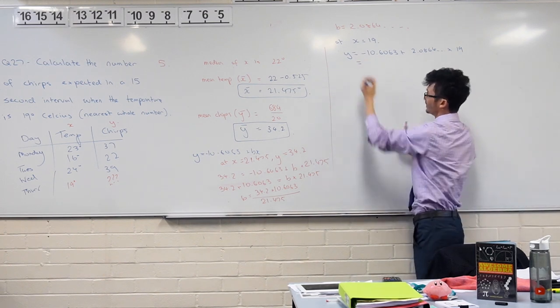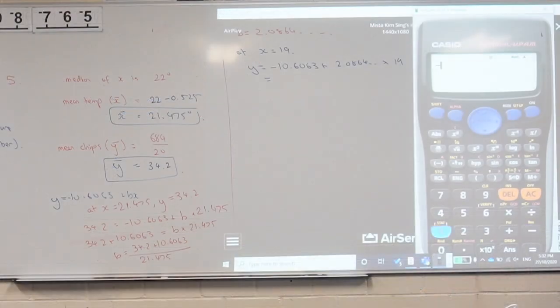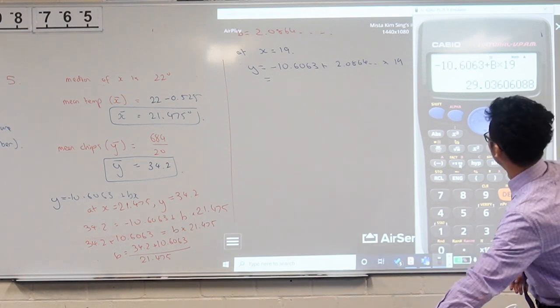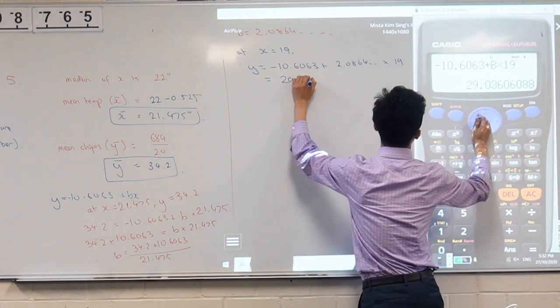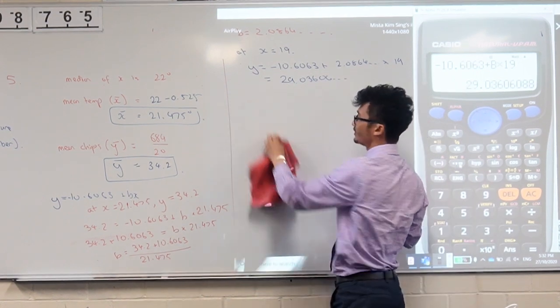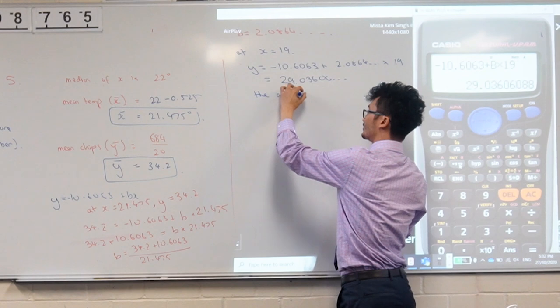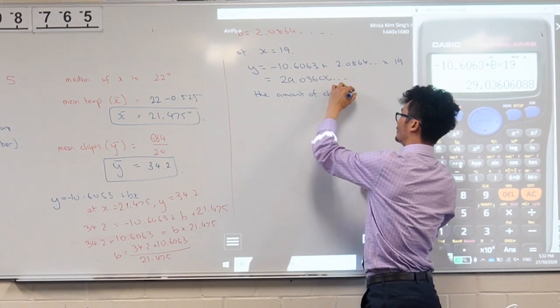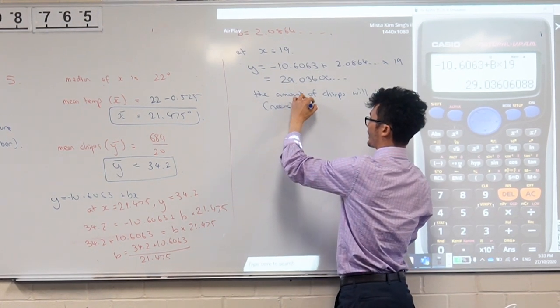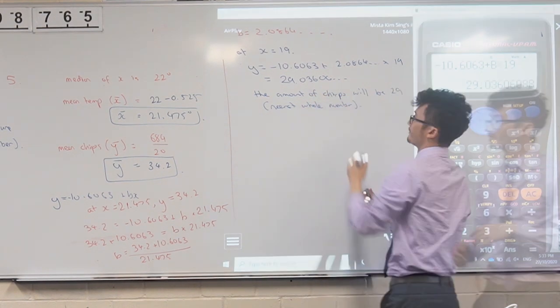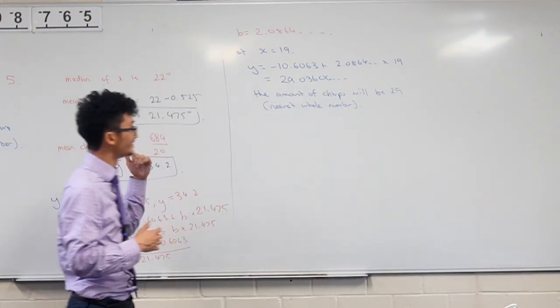So, moment of truth. And lo and behold, we get 29, that infamous number 29.03606. And if we round to the nearest whole number, we can say the amount of chirps will be 29. Okay, to the nearest whole number there. Cool. And so that's how you solve the chirps question in the HSC advanced and standard exam.